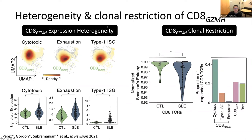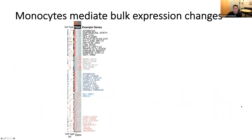There's been debate in the literature about whether type 1 interferon-stimulated genes could actually induce cytotoxicity or exhaustion, but that doesn't appear to be the case — these look like independent pathways. To further assess whether these cells may be causal rather than just associated with disease, we amplified the TCR sequence from these cells and asked whether the TCR repertoire from lupus patients is more restricted than from healthy controls. The answer is yes — lupus patients have a more restricted repertoire, and that restriction is more represented by cytotoxic Granzyme H-positive cells.